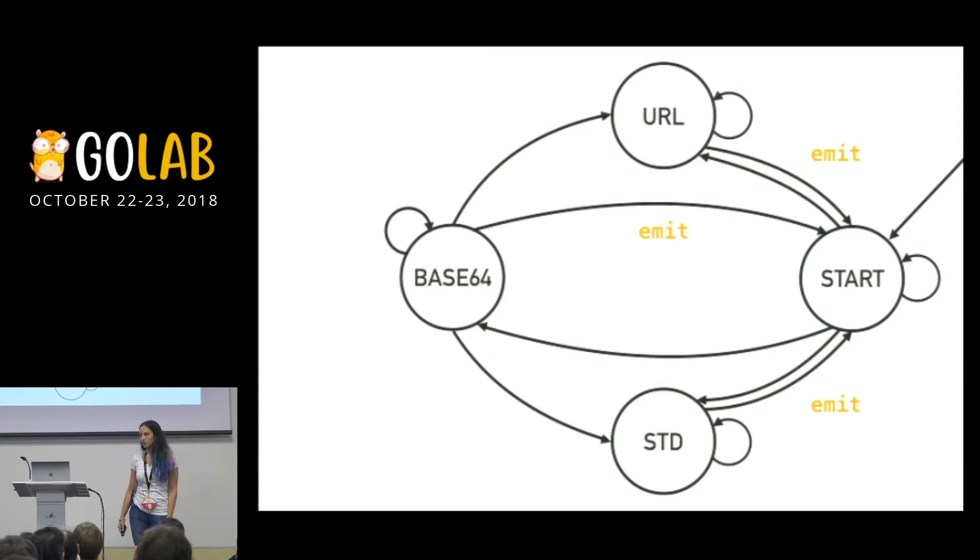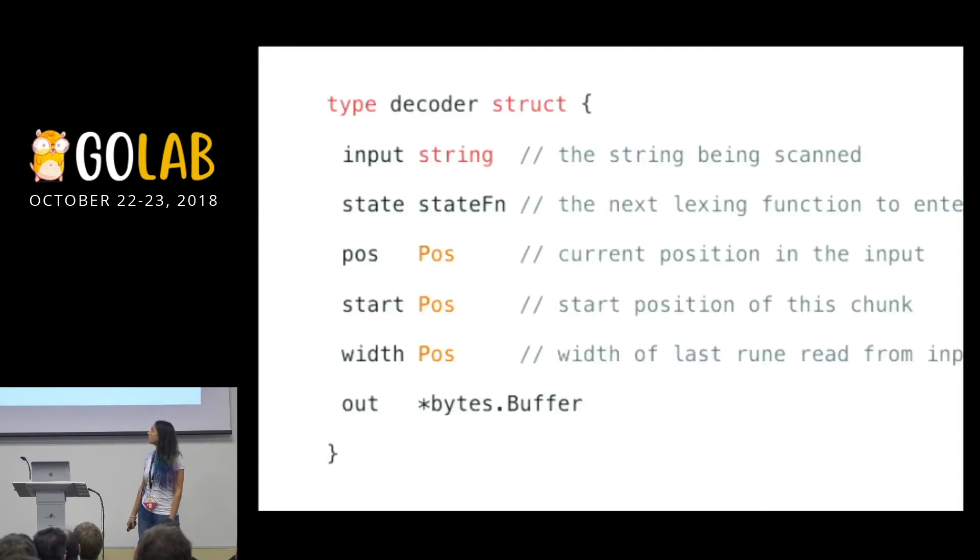We also have the decoder struct to keep everything together. We have five fields: the input one, obvious okay. The state, just to save where we are and where we are going. Three indexes to memorize where we are into the string, analyzing the string. And the results, the output. So pos is actually an integer, nothing too fancy.